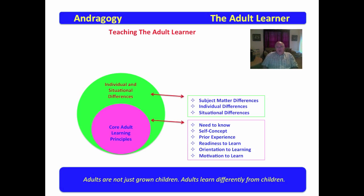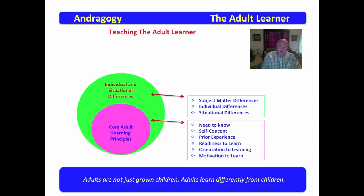Then there are situational differences. An adult is not just an adult — sometimes situations in life change. When you've supervised employees, sometimes you find a very good employee who comes in one day and just flakes out. The likelihood is that there's some situation going on in their life that has created that. Adults live in adult situations and face adult challenges, and it affects their learning and must be recognized.